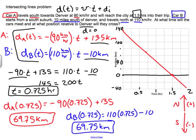For Car B, its y-intercept is at −10 km. It must cross at the same location — the same time and same position — so I draw its straight line up through the intersection point. There's my graph showing when the two cars cross paths. I'll label the intersection point in (x, y) format as (0.725, 69.75), so I know exactly what is going on at that particular point. Hopefully that all made sense as we worked through this problem!